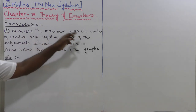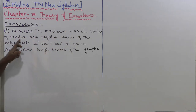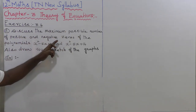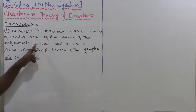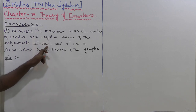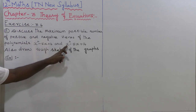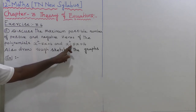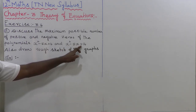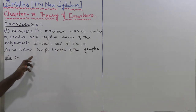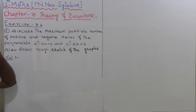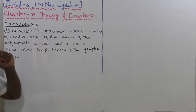Discuss the maximum possible number of positive and negative zeros of the polynomial x squared minus 5x plus 6 and x squared minus 5x plus 16. Also draw the rough sketch of the graph.